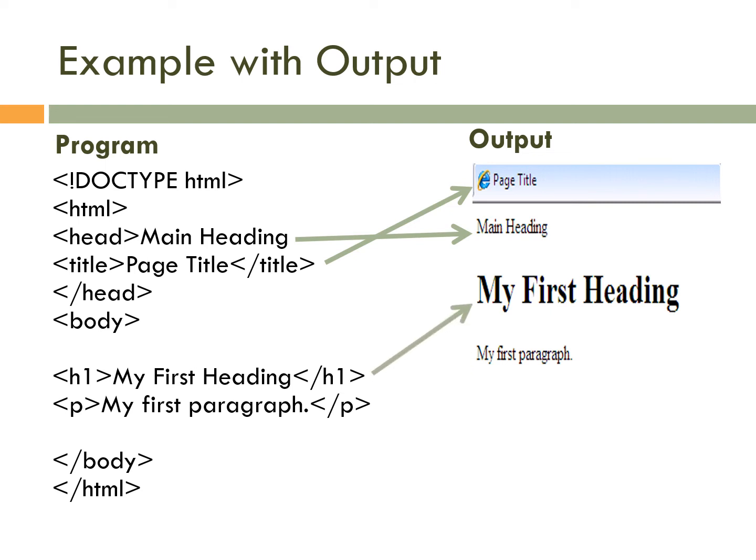Next, in the body tag we have an h1 tag that is 'my first heading' — it appears as the first heading in bold. And next is a paragraph which is written in the paragraph tag. This is our output.